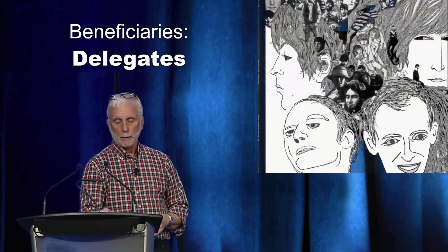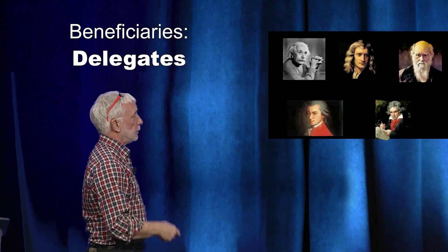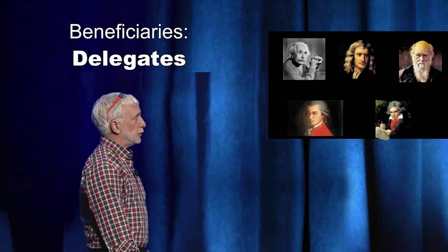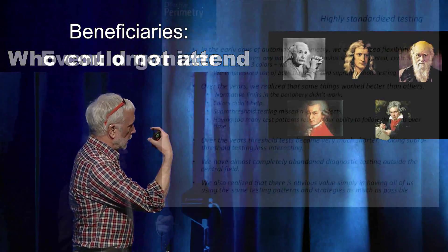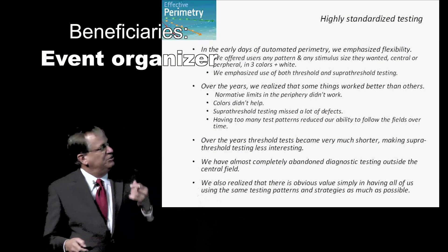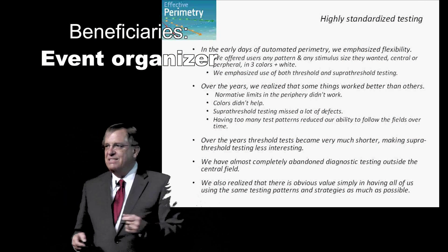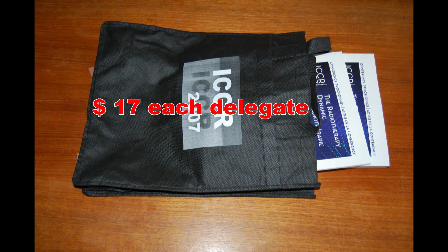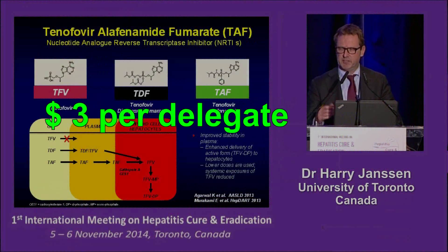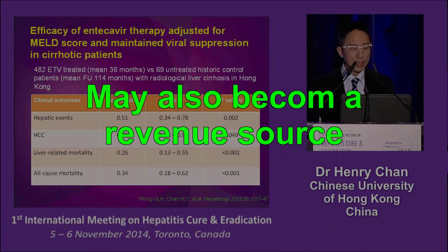Who benefits? First, delegates who could not attend certain sessions or just need to review what they may have missed. Second, association members who were not able to register to the event. And third, the event organizer, by fulfilling its mandate to support professional development. All of this fits most conference budgets: printed proceedings did cost about $17 per delegate, whereas digital recording and electronic distribution of presentations costs are in the $2 to $3 per delegate range. It may even become a revenue source when made available for a fee to those who did not register.